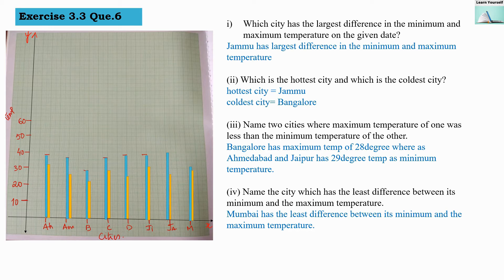The first question is: which city has the largest difference between minimum and maximum temperature on the given date? Looking at the bar graph, we can see that the difference between the two bars is maximum for Jammu. So Jammu has the largest difference.